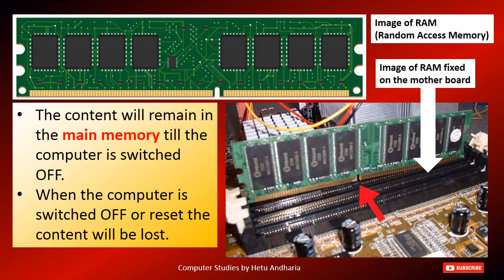Here is the image of RAM — random access memory. You should know how it looks and where it gets fitted. The upper image is of RAM, which is the main memory or primary memory. The lower image shows the RAM fitted in the motherboard in its slot. The content will remain in main memory — in the RAM — until the computer is switched off. When the computer is switched off or reset, the content will get lost.